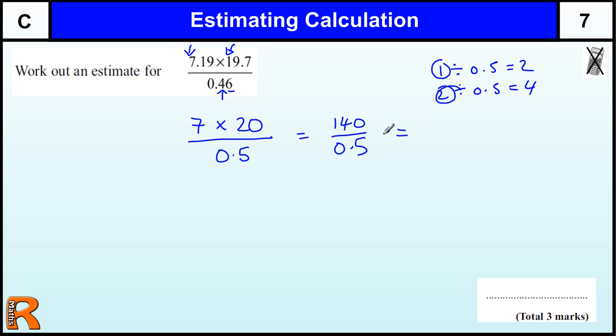Another way of doing that, another technique we can use for division, is if we times the top and bottom by the same number, that actually keeps the division the same. So if I double the top, 280, and I double the bottom 1, that gives us the answer 280, because 280 divided by 1 is just 280.